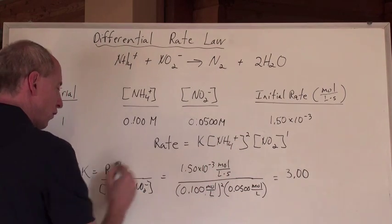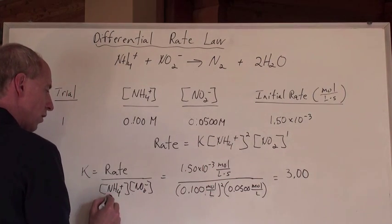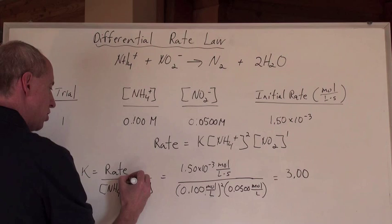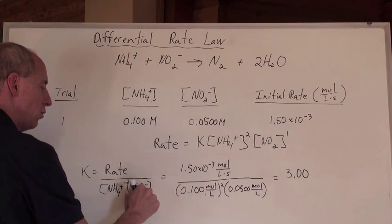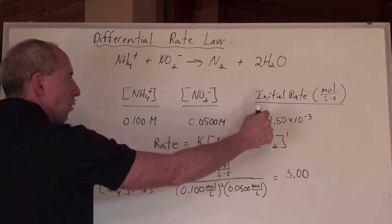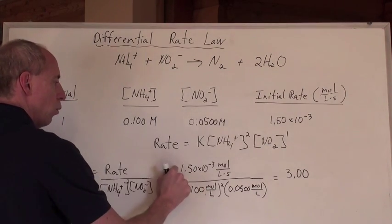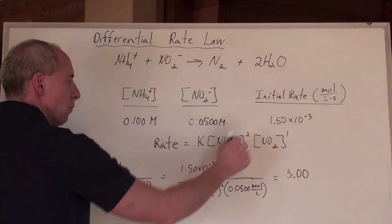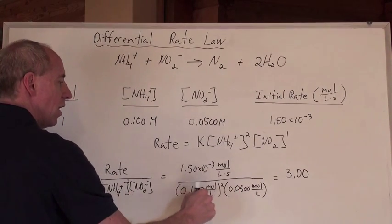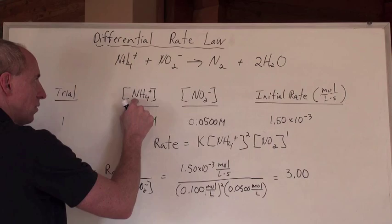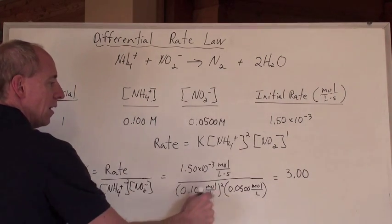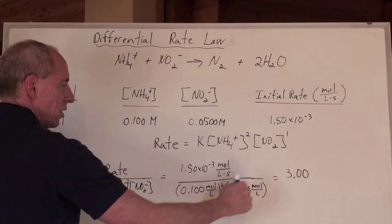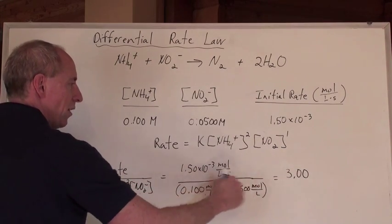So if I manipulate this formula to solve for k, which is rate over the concentration of the NH4 positive, but it's squared, divided by the NO2 negative, then I'm going to take that rate and put it in for there, 1.50 times 10 to negative 3 moles per liter per second, and that equals the concentration of this ion here, but it's squared, divided by the concentration of the NO2 negative. And when you do that math here, you get 3.